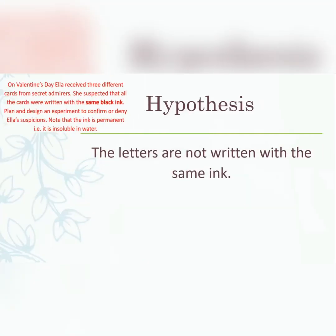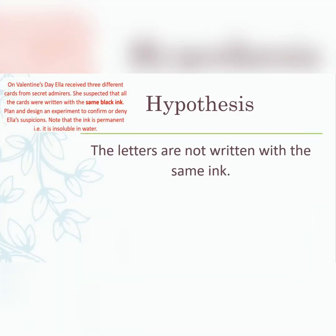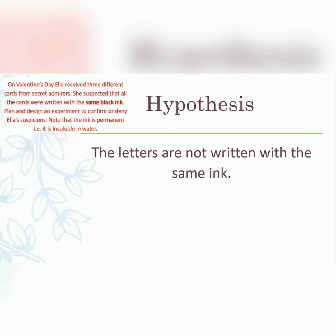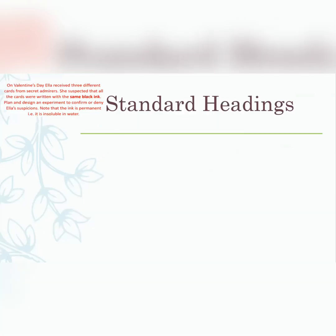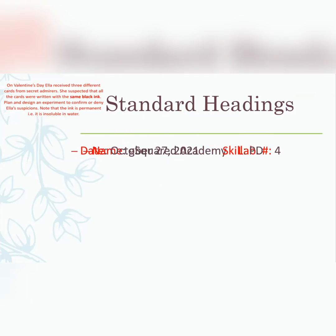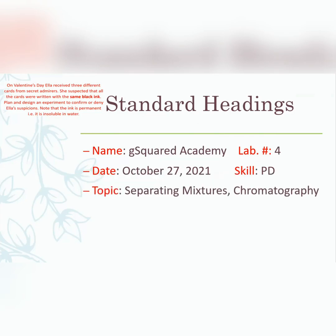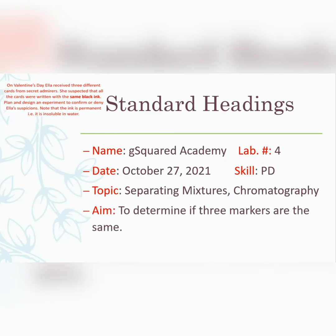Our hypothesis: the letters are not written with the same ink. We took a stand — we could have said they are written with the same ink, but we chose the other position. This is testable and a position has been taken. Our standard headings: G Squared Academy, Lab Number Four, October 27, it's a PD lab. Our topic is separating mixtures — chromatography — because when you're doing a PD, you're like the teacher, so you have to know the chemistry behind what you're doing.